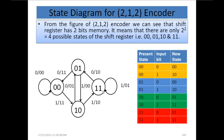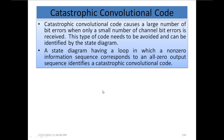The same information seen in table form is depicted here in the state diagram. Catastrophic convolutional code causes a large number of bit errors when only a small number of channel bit errors is received. This type of code needs to be avoided and can be identified by the state diagram — a loop in which a non-zero information sequence corresponds to an all-zero output sequence identifies a catastrophic convolutional code.